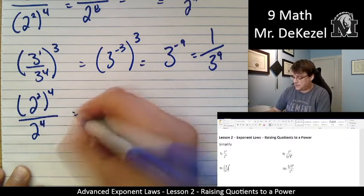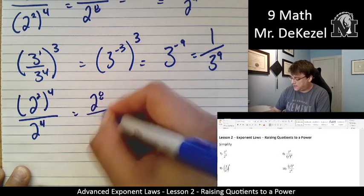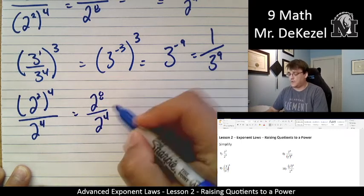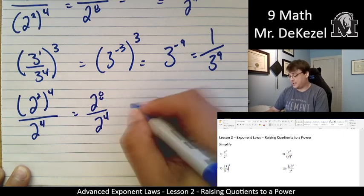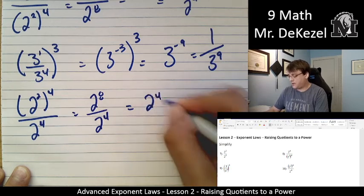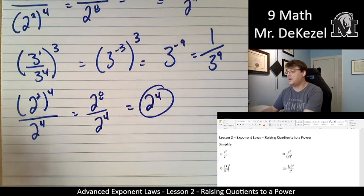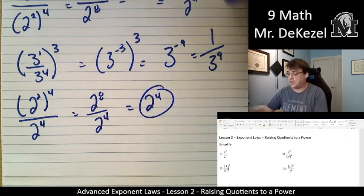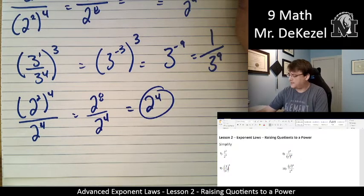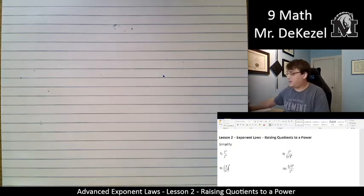So 2 times 4 is 8, so this is 2 to the power of 8 divided by 2 to the power of 4. Same base, so we subtract the exponents. That's 2 to the power of 4 for our final answer. You can pause and give the next ones a try and see if you got them right. I will continue on right away.